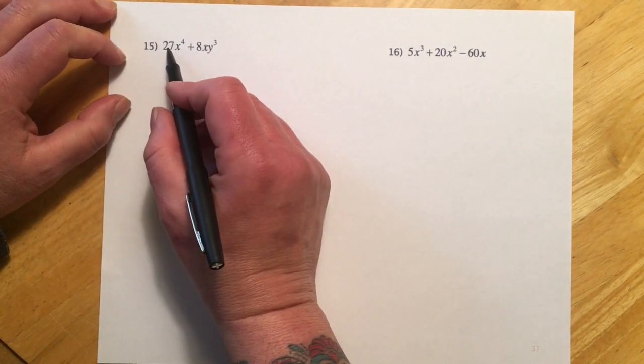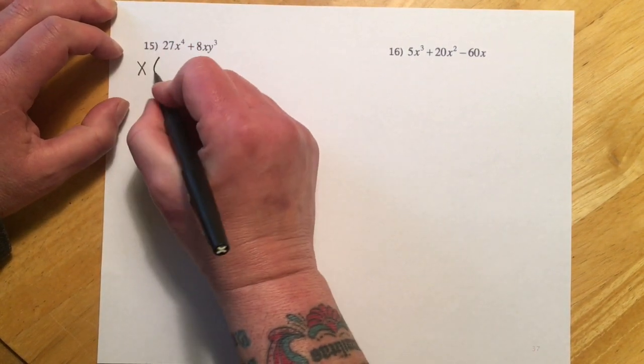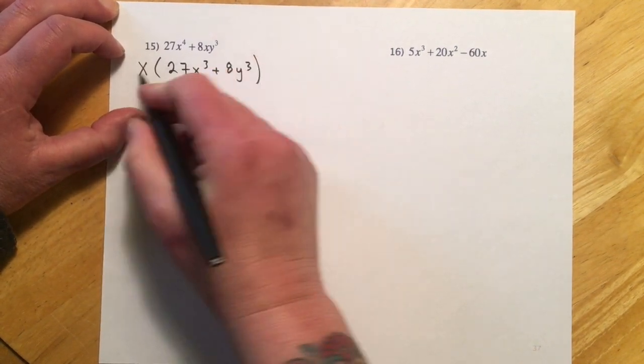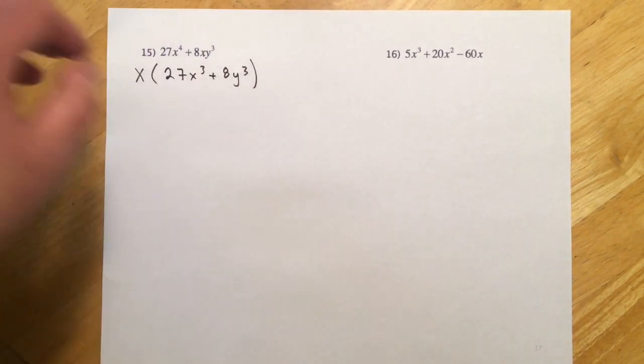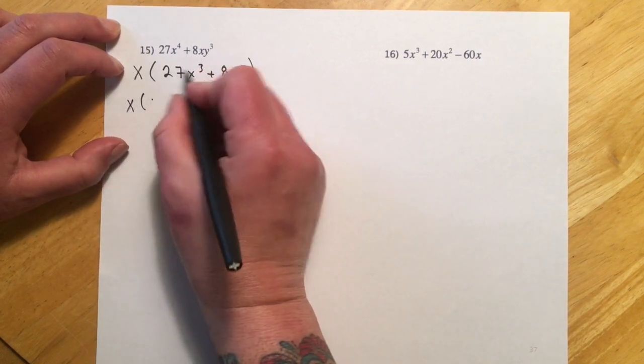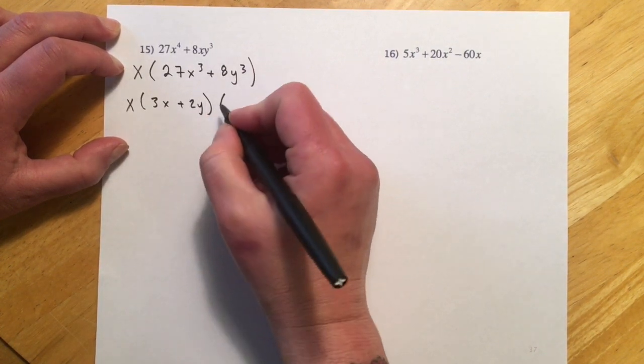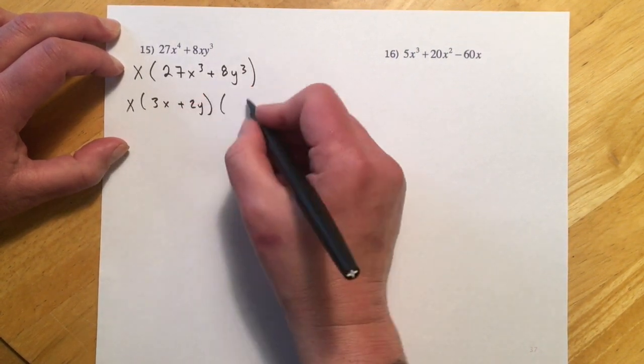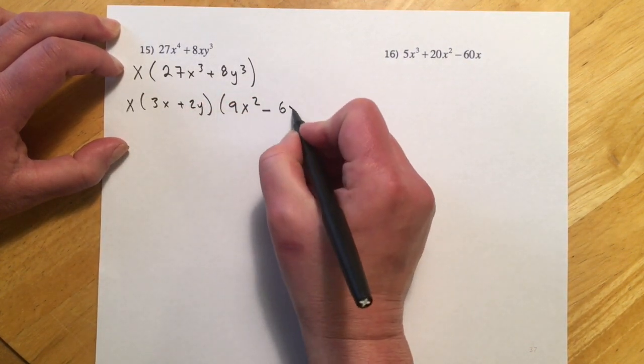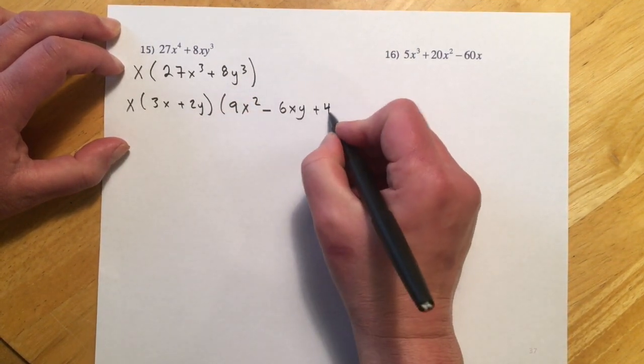Number 15 is going to be 27 and 8. Nothing to do there, but I can take an X out. So now I have 27X cubed plus 8Y cubed. And then there we can see our cubed formula. So we'll go X and then 27X cubed will make a 3X. 8Y cubed will make a plus 2Y. And then again, we're just going 3X times 3X, 9X squared. And then opposite sign, 3X times 2Y. So that will be a 6XY. And then always positive, 2Y times 2Y, 4Y squared.